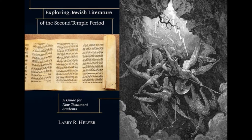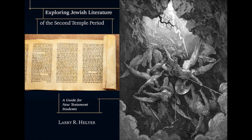Now, the last thing — the question about languages. What languages were these works originally written in? For the most part, if you're talking about the original compositions of these books, whether they be Apocrypha, Pseudepigrapha, or whatever, it's going to be Hebrew, Aramaic, and Greek — the big three. A number of these books can also be found preserved in other languages because they were translated: things like Coptic, Syriac, Latin, or Ethiopic in the case of the Book of Enoch and the Book of Jubilees. But as far as the original composition, it's going to be either Hebrew, Aramaic, or Greek.